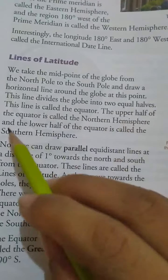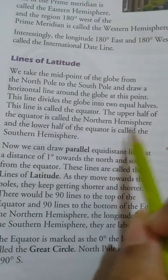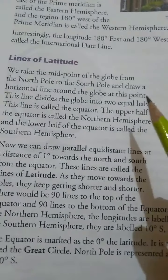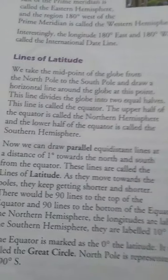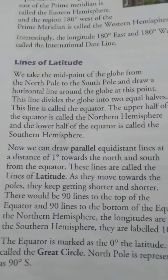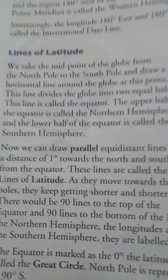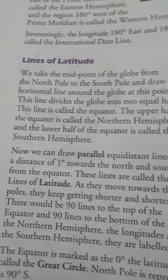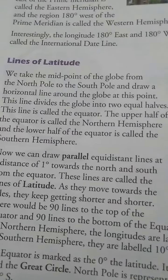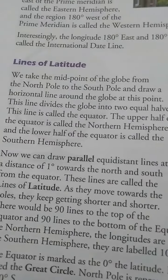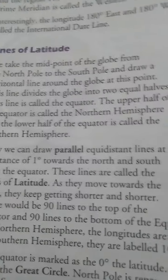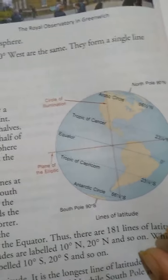The upper half of the equator is called the Northern Hemisphere and the lower half is called the Southern Hemisphere. This is a horizontal line that passes through the Earth from the center and divides it into two equal halves. We call it the Equator, as shown in the picture.